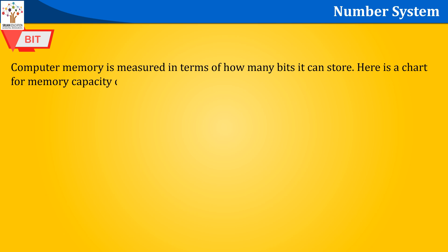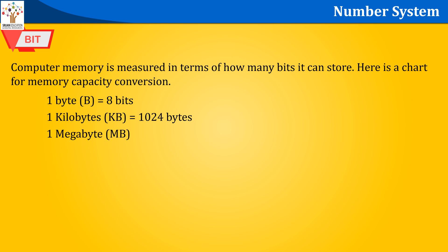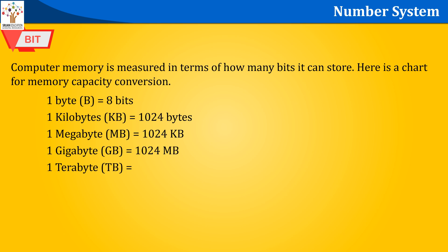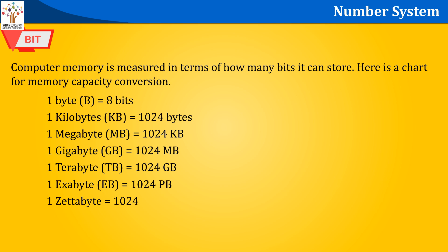Computer memory is measured in terms of how many bits it can store. Here is a chart for memory capacity conversion: 1 byte (B) equals 8 bits; 1 kilobyte (KB) equals 1024 bytes; 1 megabyte (MB) equals 1024 KB; 1 gigabyte (GB) equals 1024 MB; 1 terabyte (TB) equals 1024 GB; 1 exabyte (EB) equals 1024 PB; 1 zettabyte equals 1024 EB; 1 yottabyte (YB) equals 1024 ZB.